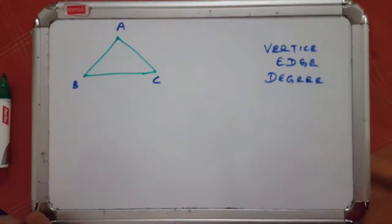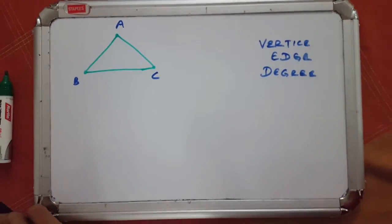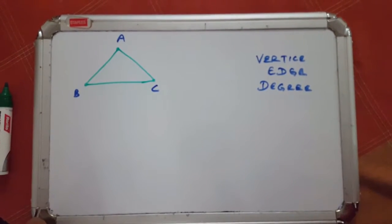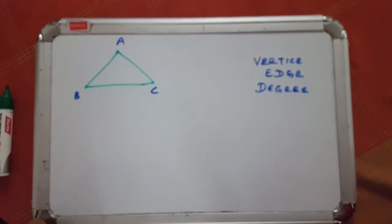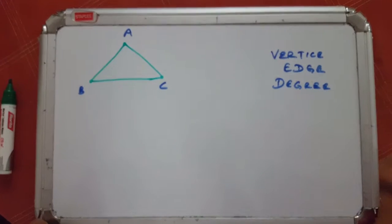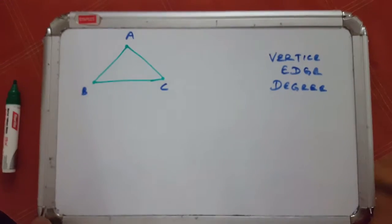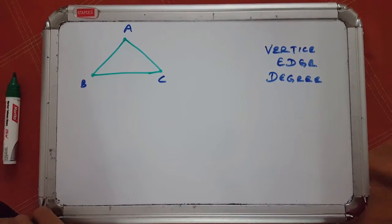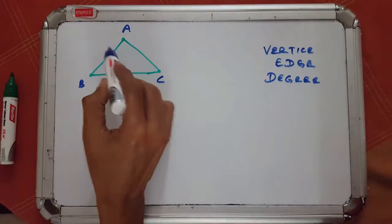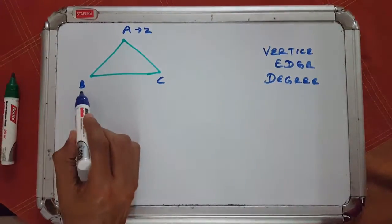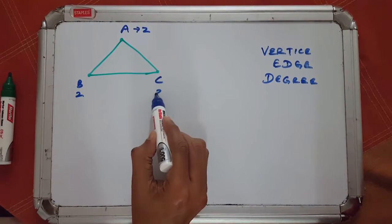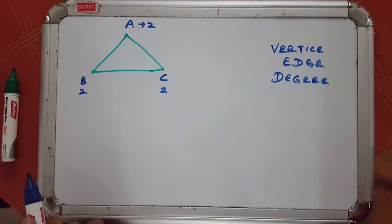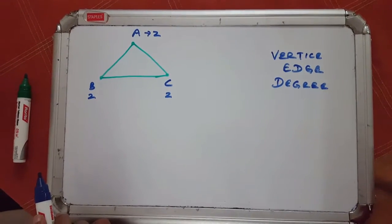Let's take a look at this diagram. It looks like a triangle. There are three points — we're going to call those points vertices — and the sides of the triangle connecting the vertices are called edges. We have another term to introduce: degree. Degree is simply the number of edges at a vertex. So vertex A has a degree of two, B has a degree of two, and so does C.